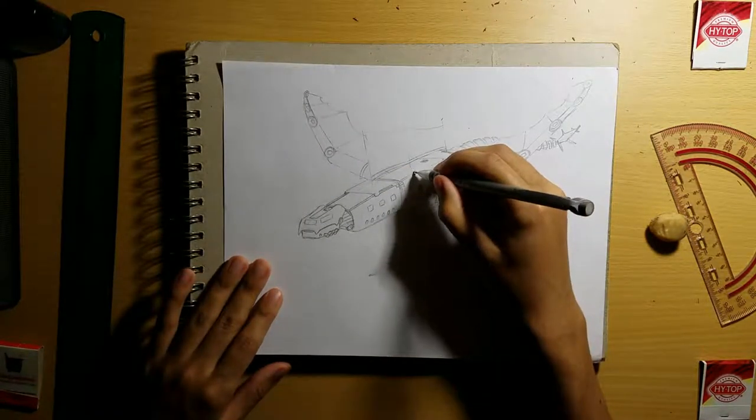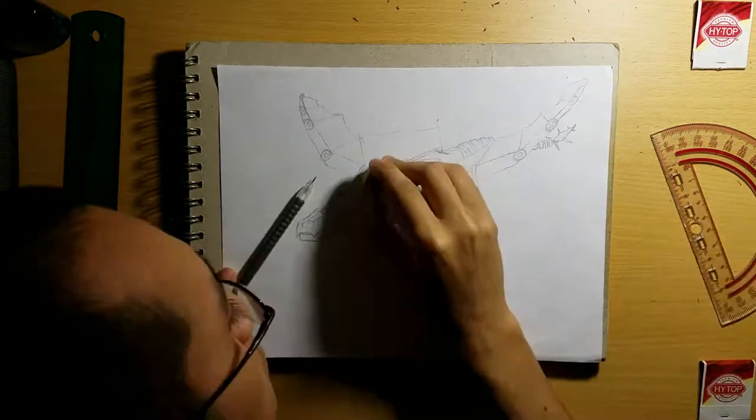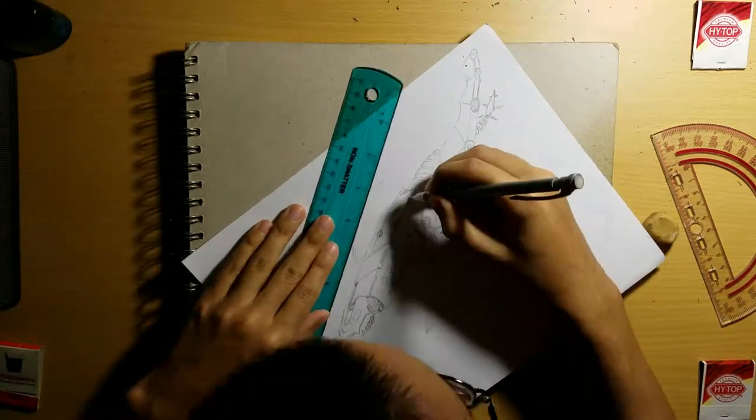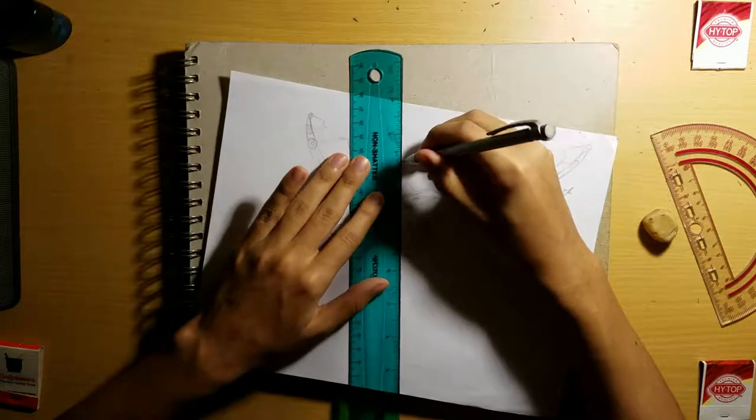So we're going to start drawing the cannons on right now. Happy little cannons right there. Little artillery shells. We're going to draw another cannon there. Because every cannon needs a friend.